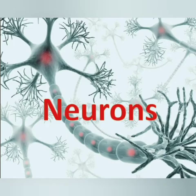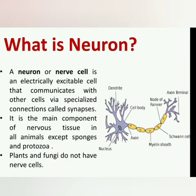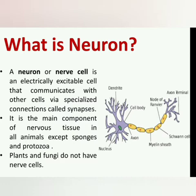The next element of the nervous system is the neuron. A neuron, or nerve cell, is an electrically excitable cell that communicates with other cells by specialized connections called synapses. It is the main component of nervous tissue in all animals except sponges and protozoa. Plants and fungi do not have nerve cells.